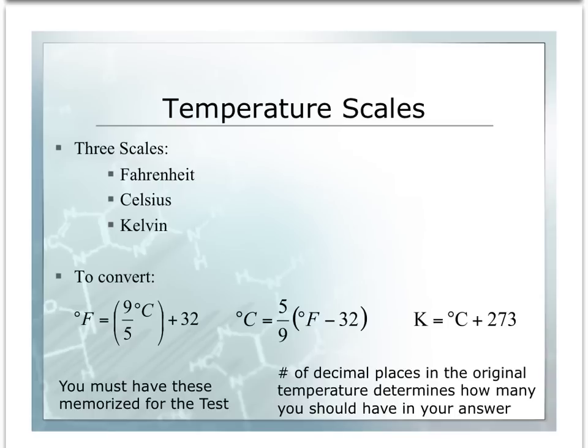To convert, we are going to use the equations that are given. The first equation is to convert Fahrenheit from Celsius. Please note the parentheses and where they are located. If you do not keep your parentheses in place, you will calculate incorrectly. Fahrenheit equals 9/5 times the temperature in Celsius plus 32. For Celsius, we take 5/9 of the difference between Fahrenheit and 32. And to calculate Kelvin, we take our temperature in Celsius and add 273.